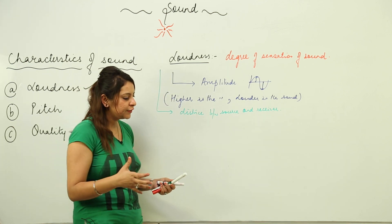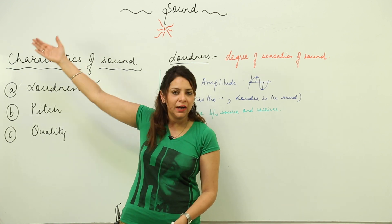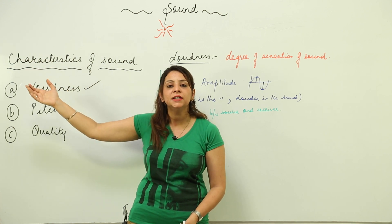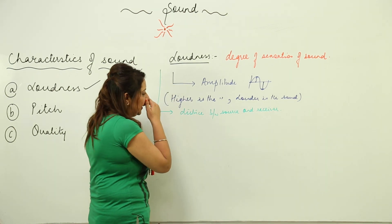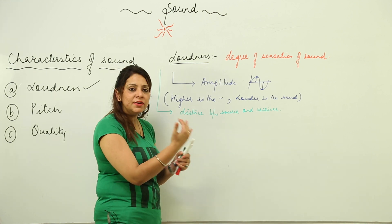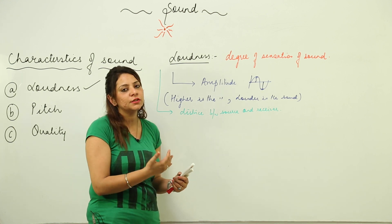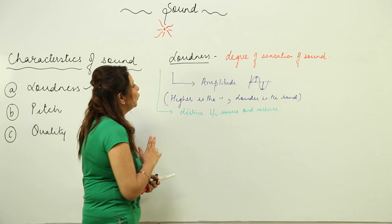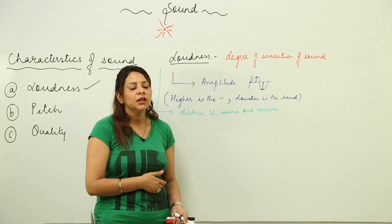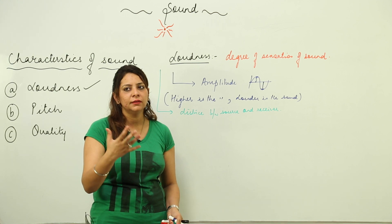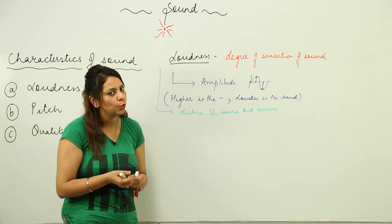Suppose somebody is standing just near to you and says something — that sound appears to be appropriately loud. But if somebody is very far from you and speaks, that sound doesn't appear to be as loud; it is actually faint. If source and receiver are closer to each other, the sound will appear louder. If they are far from each other, the sound will be faint. It also depends upon many other factors like surface area and weather conditions, but the main two factors are amplitude and distance between source and receiver.